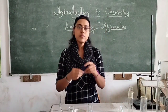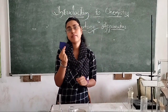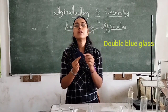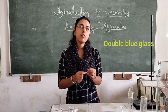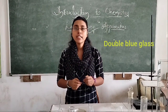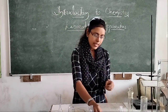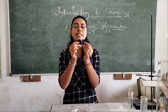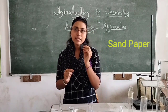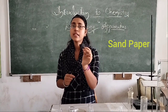The next apparatus is this kind of two blue glass, called a double blue glass. This double blue glass is used in flame experiments or flame tests for the identification of inorganic compounds, which you are going to have in our upcoming classes. Next, this one is sand paper. Sand paper is used to clean or clean the platinum wire, which is used in the flame test.